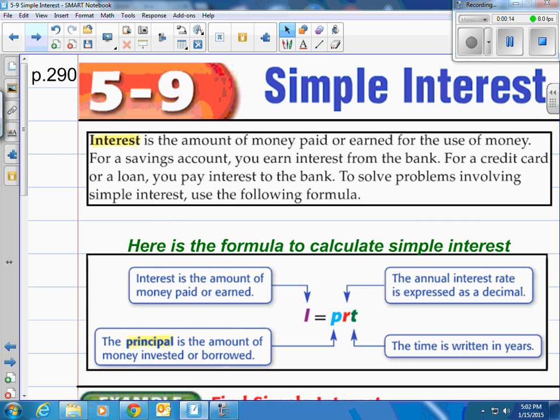Let's talk about interest and the simple form of interest. Interest is the amount of money paid or earned for the use of money. So you can either make money or you could be paying money. Those would be called interest. To solve problems involving simple interest, use the following formula.